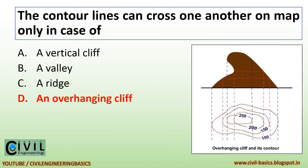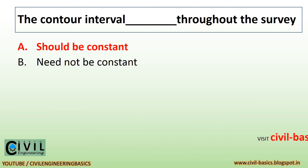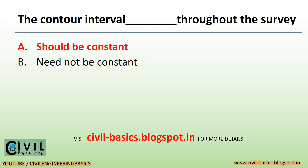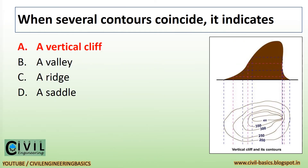The contour lines can cross one another on a map only in the case of an overhanging cliff. You can see the contour lines of an overhanging cliff in the given figure.